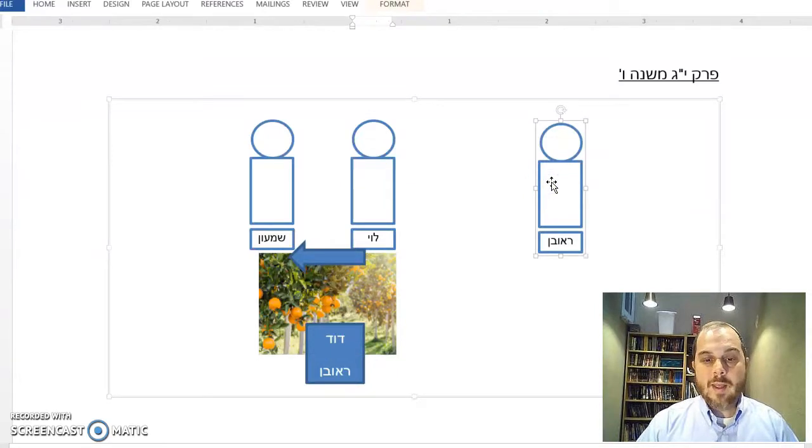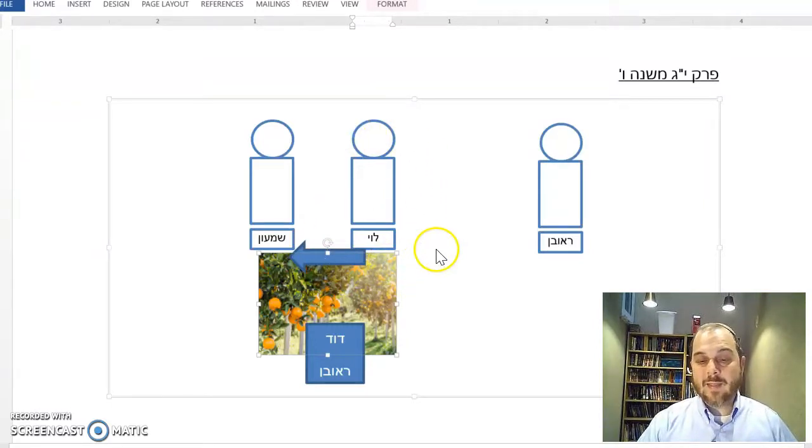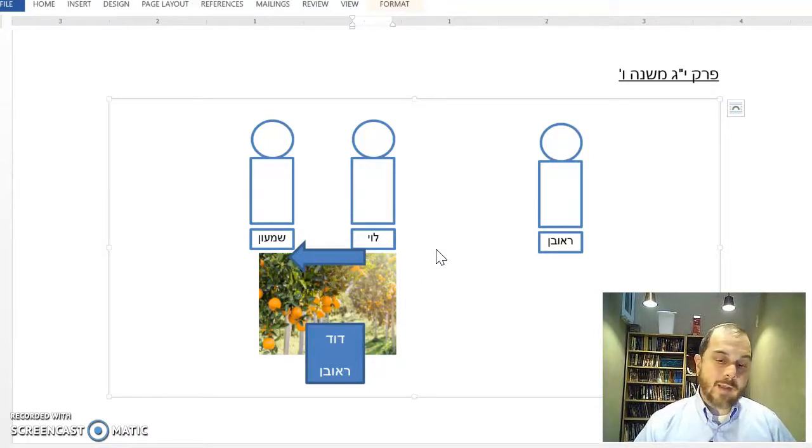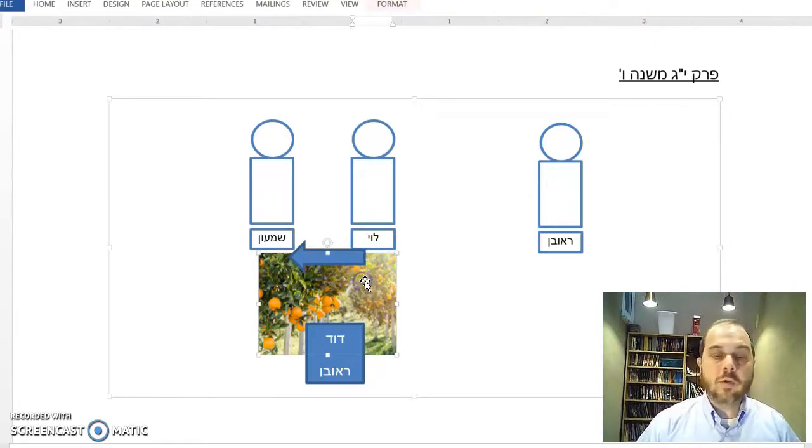If Reuven wants to come and say this field belongs to me, he has to produce a shtar or have chazakah - recognized ownership, that he lived in the field. My house is my house because I've been living in the house, I had a contract, and everybody knows it's my house, unless somebody can prove that you sold it.